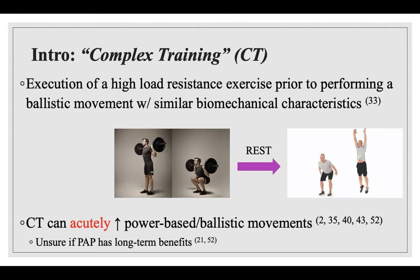The typical method used to induce PAP is complex training, defined as the execution of a high-load resistance exercise prior to performing a ballistic movement with similar biomechanical characteristics. For example, you could perform a barbell back squat at or below your 6-rep max, rest for a designated time interval, and then execute 5 counter-movement jumps. The goal is to acutely potentiate the subsequent exercise. Research shows this method has been useful for enacting PAP to acutely enhance power performances.